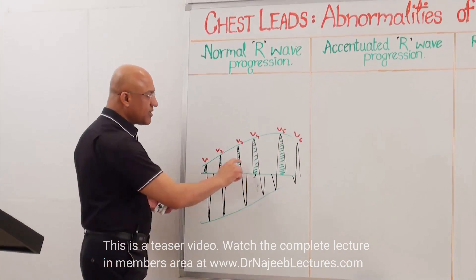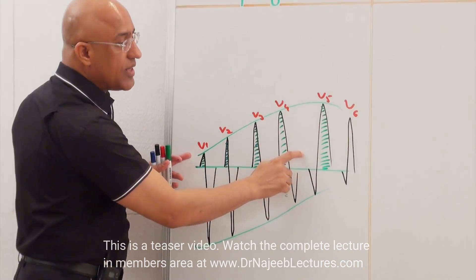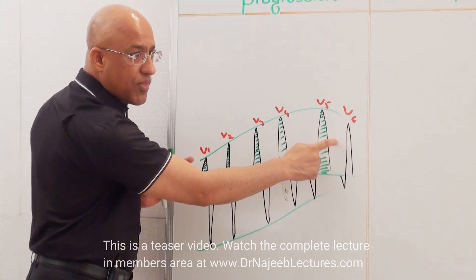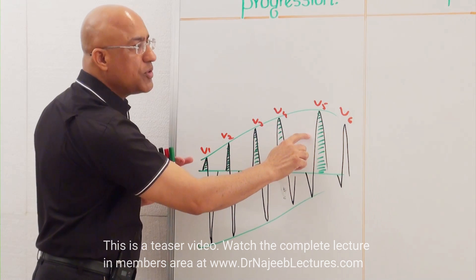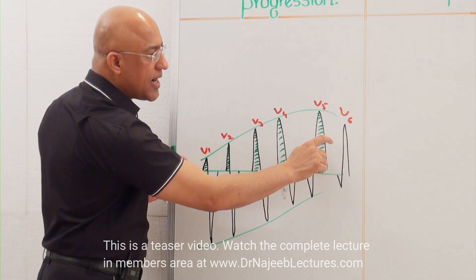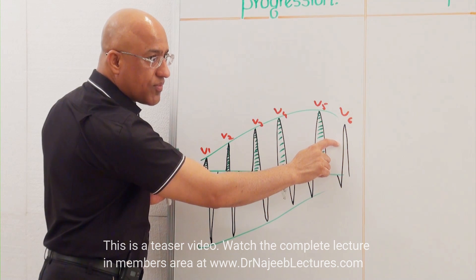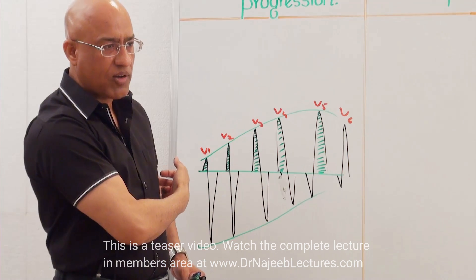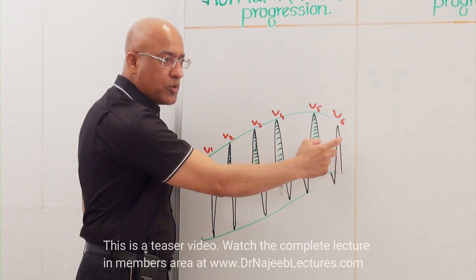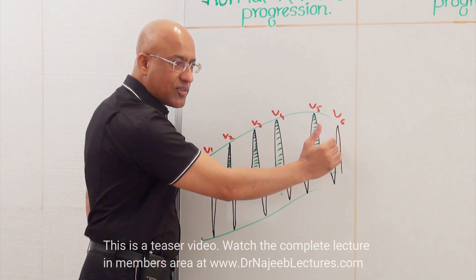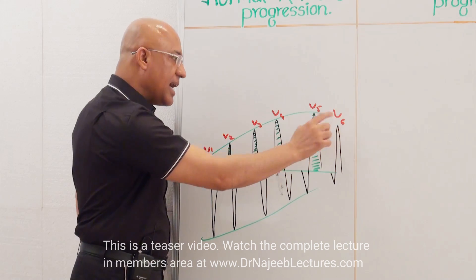This R-wave progression — why it occurs I will explain. But I want to mention one thing: in V6, usually the R-wave is less tall than V5. The reason is that the electrode for V6, where it is applied in the mid-axillary line, between the heart and the electrode there is a lot of lung tissue which attenuates the depolarizing currents. That is why the R-wave becomes relatively less tall compared to V5.